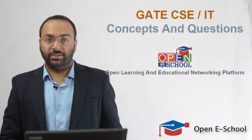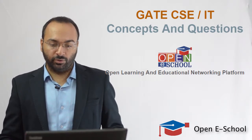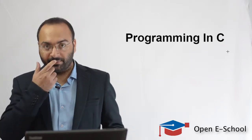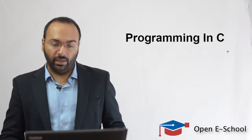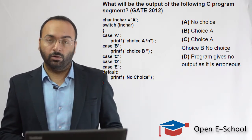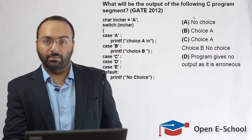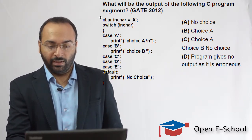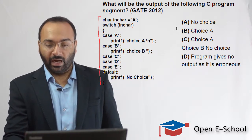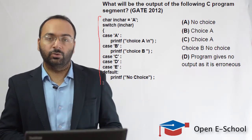You are in the GATE CSC and IT section at OpenE School. In this series we are discussing previous year questions as well as concepts related to the Programming in C subject. In this video we will discuss a question that was asked in the GATE 2012 examination — what will be the output of the following C program segment? We have been given a program in C and asked which of the following choices is true.